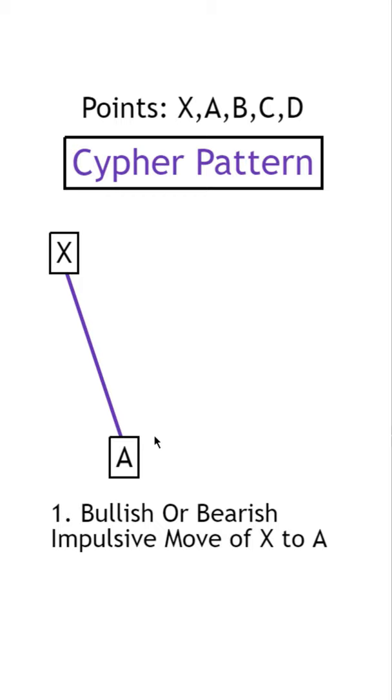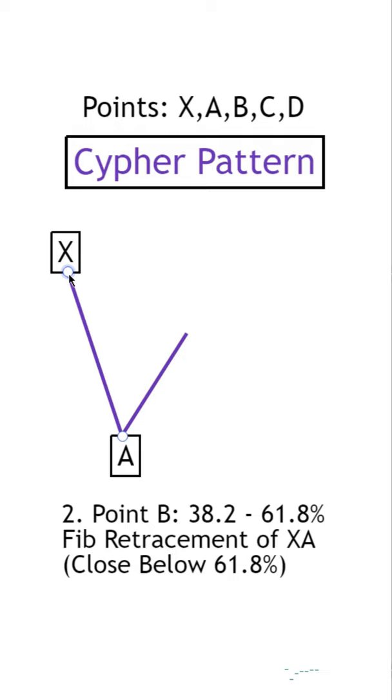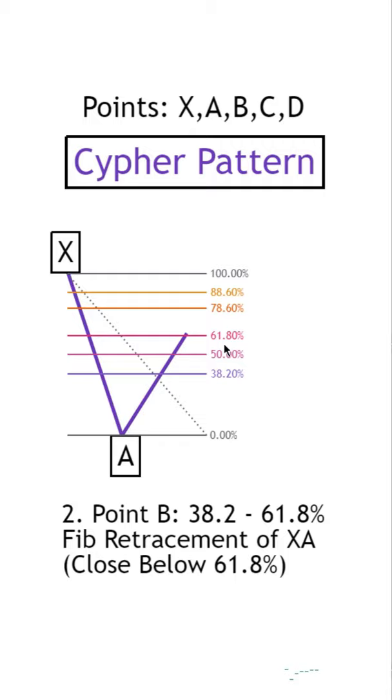Next, with the Fibonacci Retracement Tool moving from point X to A, we'll find point B because it needs to land between 38.2 and 61.8 without closing past 61.8.